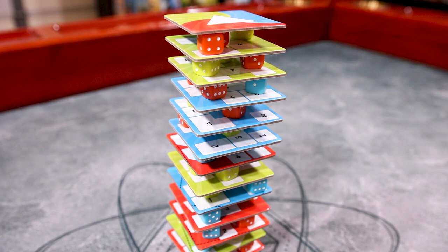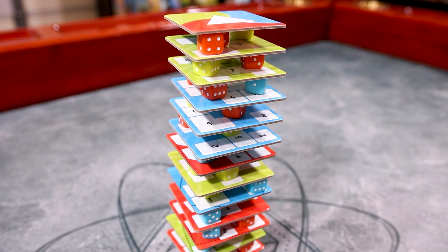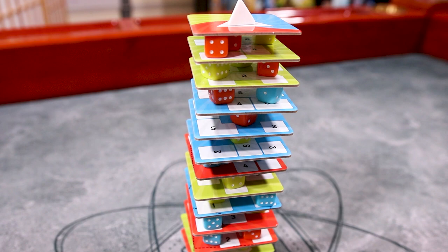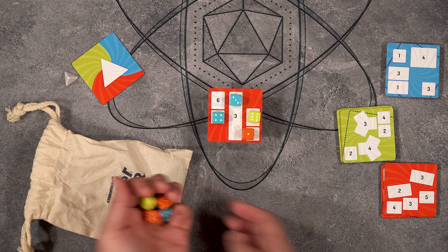Teeter Tower is a competitive dexterity game where players will be placing dice on a precarious tower and then placing the next tile on top of that. Players will win if they place all the tiles and then successfully place the capstone tile and die on the tippy top, and they will lose if any dice fall off the tower.